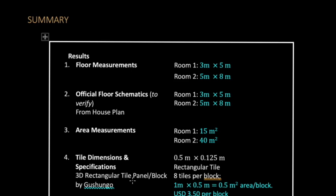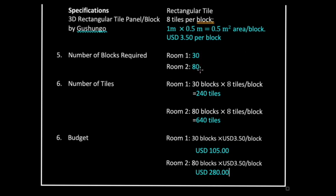The area per block was stated, and the cost per block can also be included. The number of tiles required was 30 for one room and 80 for the other — consult that slide for reference. Be careful with this part and check the dimensions, as there may be a typo that needs adjustment. Essentially you must demonstrate the specifications and number of tiles.